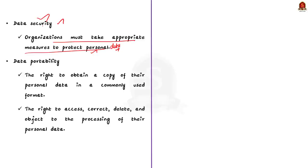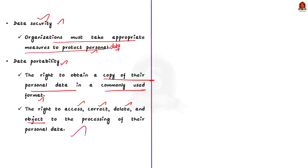The next provision is data portability, also mentioned in the bill. Individuals have the right to obtain a copy of their personal data in a commonly used format. Individuals also have the right to access, correct, delete and object to the processing of their personal data. So the bill gives these important rights to empower people who use the digital space.